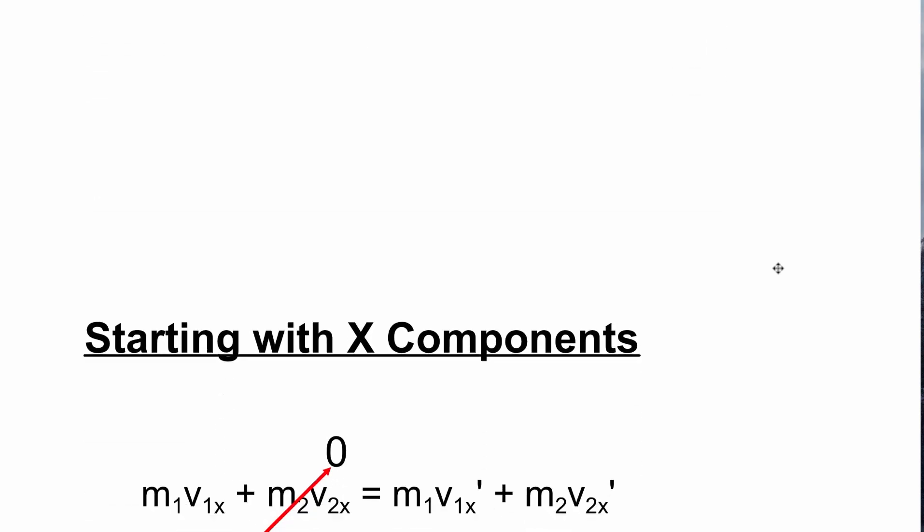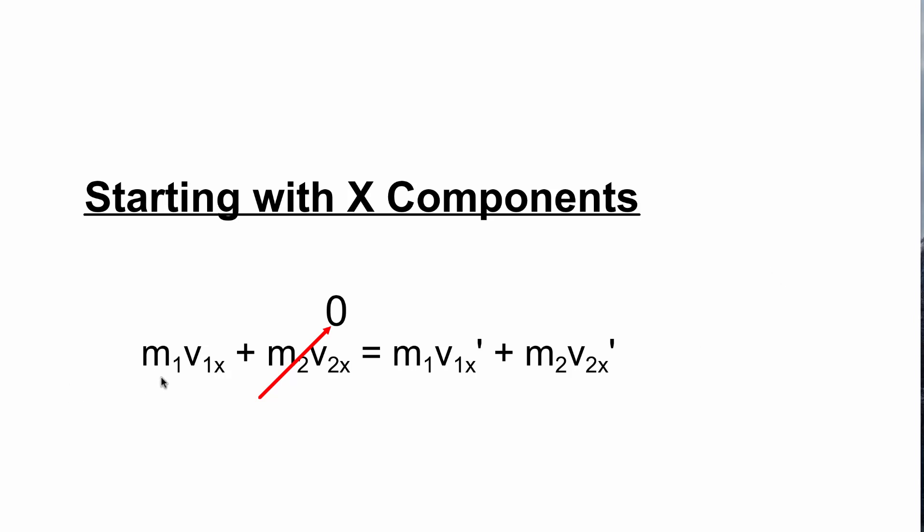We know that momentum is conserved in these interactions. We're going to start off by looking at the x component. Ball one times its initial velocity plus ball two times its initial velocity. Ball two was initially at zero, so we can make that go away. This equals ball one times its velocity after the collision plus ball two times its velocity after the collision.